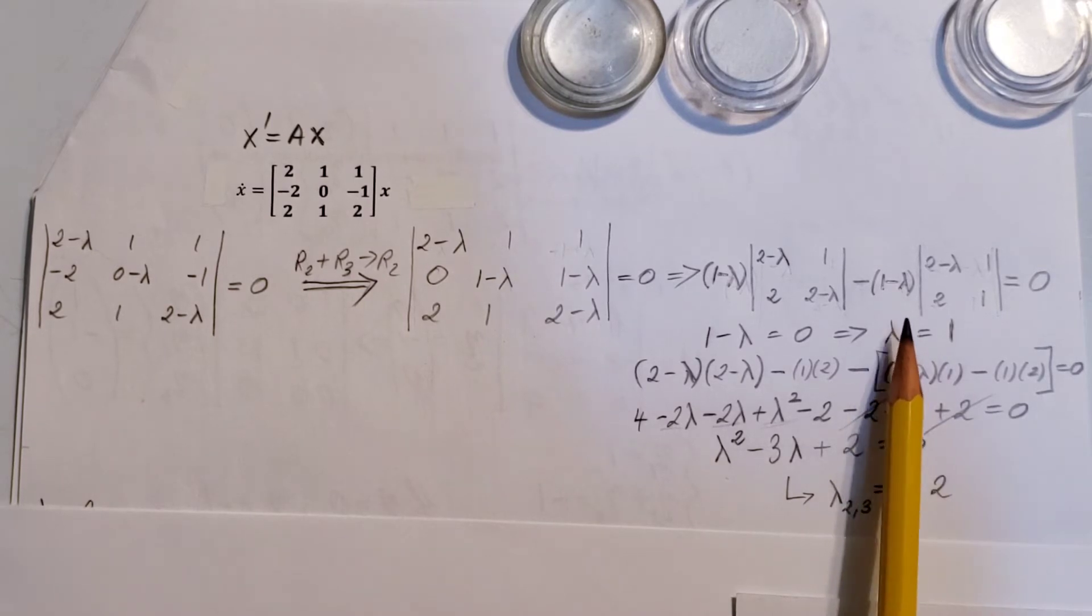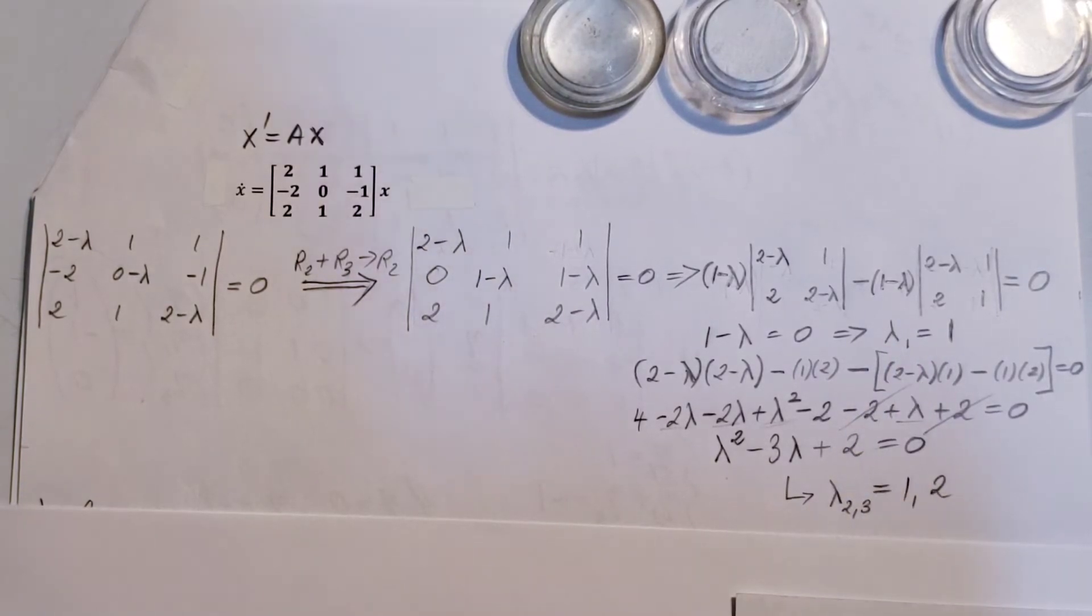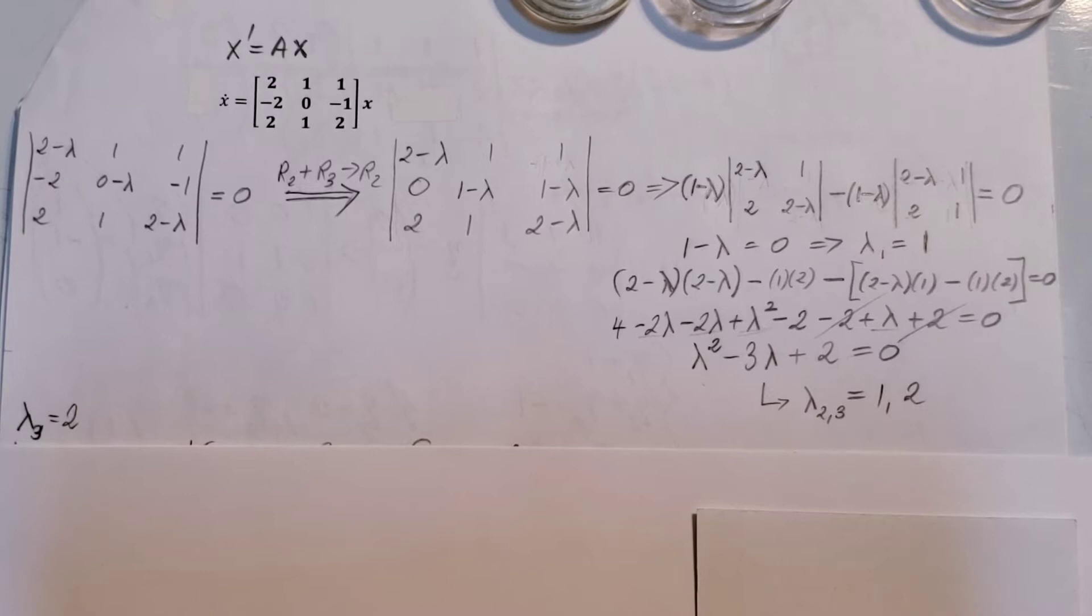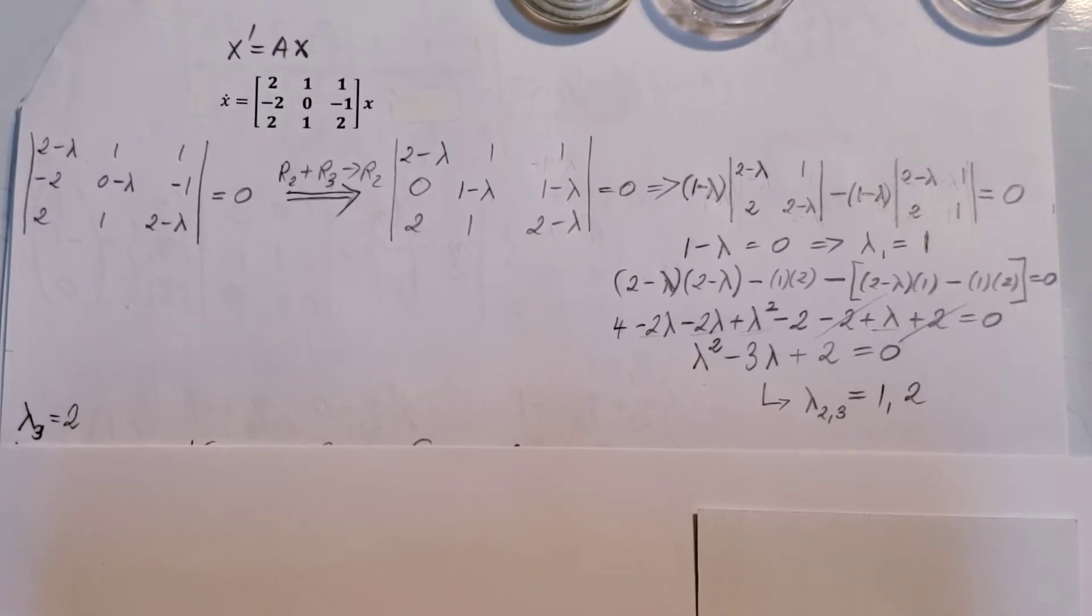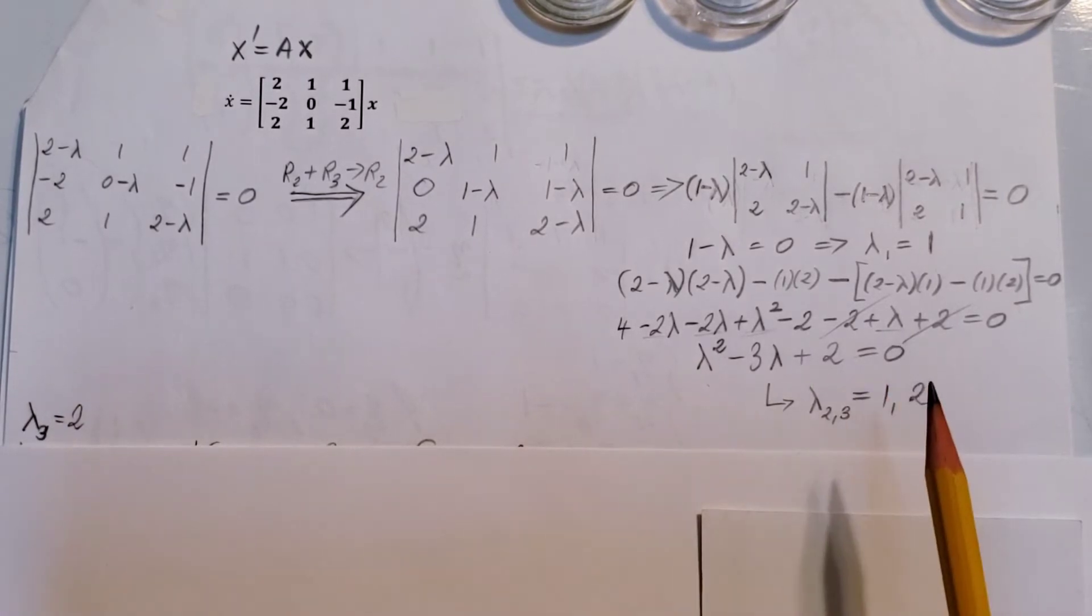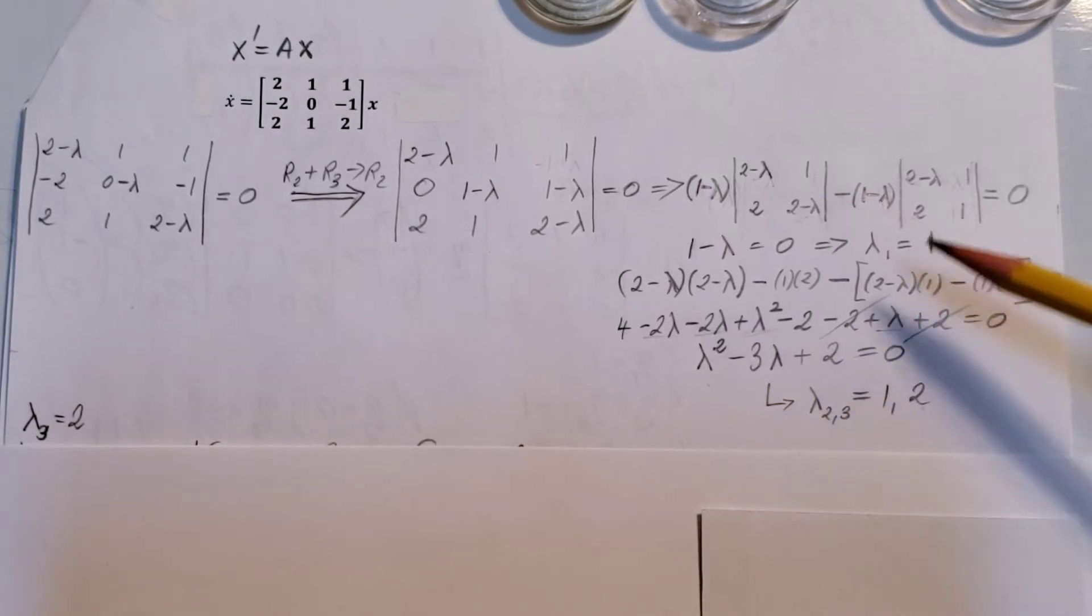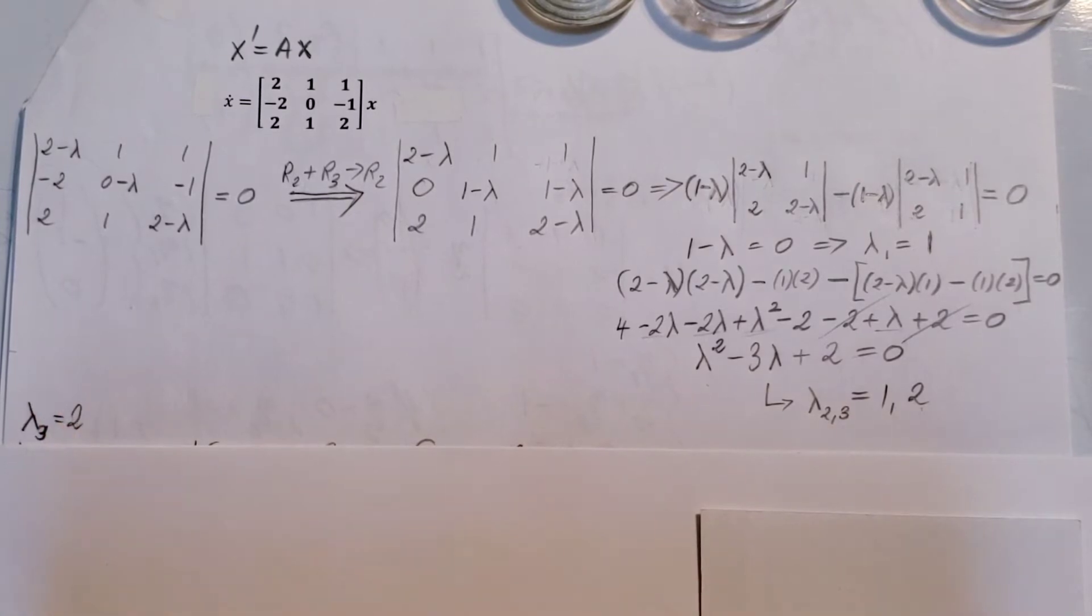There it is, our three eigenvalues. Next, we need to find our eigenvectors. I'm gonna start first with the eigenvalue that is unique, which is our 2. And then the other ones are 1 and 1. Those are gonna come after. So, let's get started with 2.